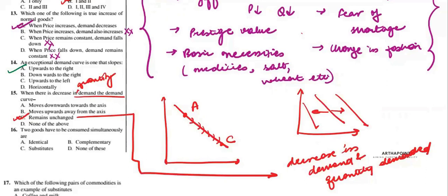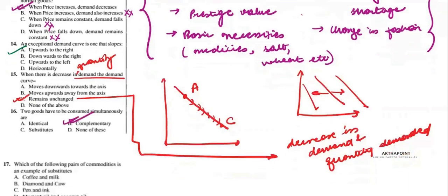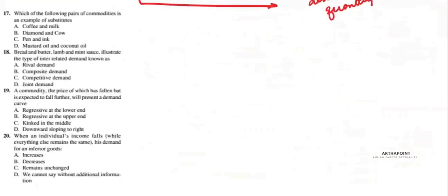Two goods that have to be consumed simultaneously are complementary goods. Question 17: which pair is an example of substitutes? Coffee and milk have to be consumed together; diamond and cow are unrelated goods; pen and ink have to be consumed together. Mustard oil and coconut oil are substitutes — the answer is D.